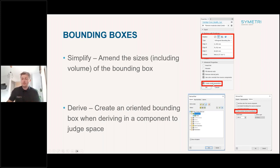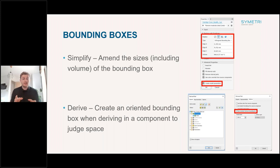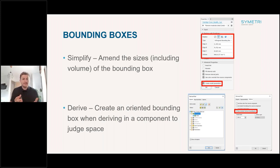There's also an option to create model parameters. This is just a checkbox in the advanced properties section. When you create your bounding box, it's going to automatically export the length, width, and height parameters into the parameters window. You could then pull that through to your drawing, bill of materials, or title block to make sure you've got the outer limits shown within there.